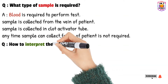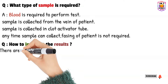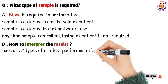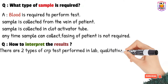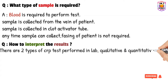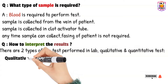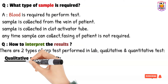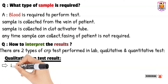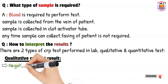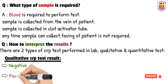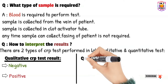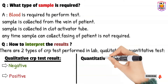An important point is how to interpret the results. There are two types of CRP tests performed in the lab: qualitative and quantitative. For the qualitative test, results are reported in a simple way — either negative, or positive if there is inflammation. The quantitative test is more accurate than the qualitative test.